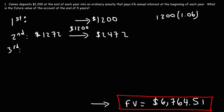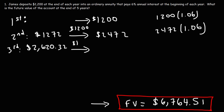To find the account value at the beginning of the third year, we take $2,472 and multiply it by 1.06, giving $2,620.32. He then makes his third annual deposit of $1,200, so adding $1,200 to $2,620.32, the account has $3,820.32 at the end of three years.